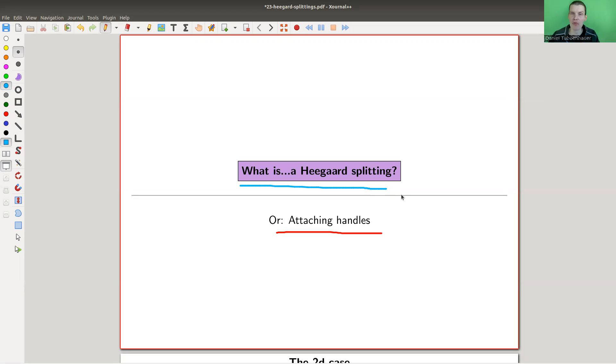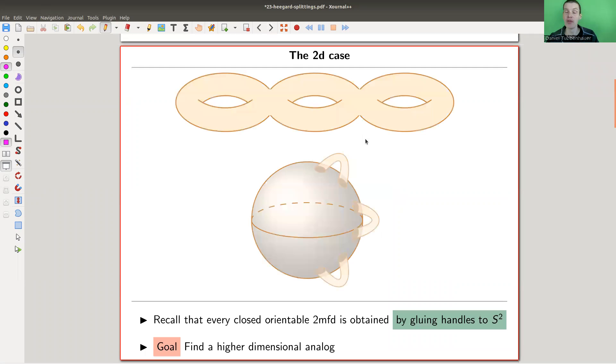Let's just get started with Heegaard splitting, probably that's horribly wrong. Anyway, Danish names are very hard to pronounce. There was a Danish mathematician with a name that I can't pronounce. Let's go to the idea.